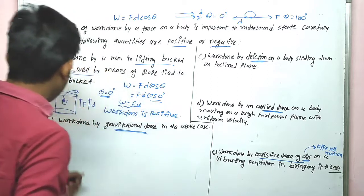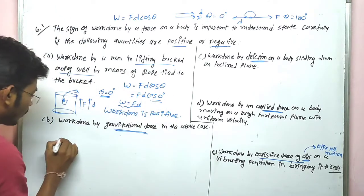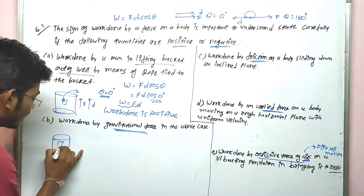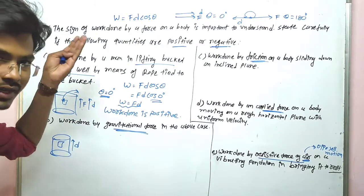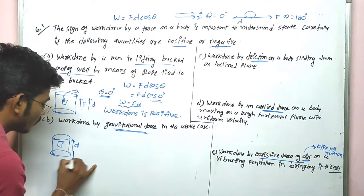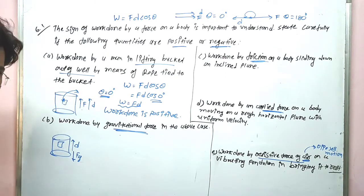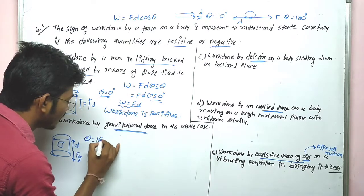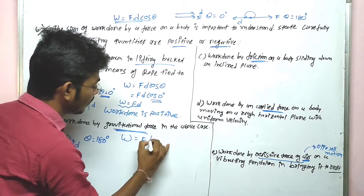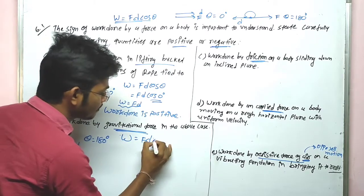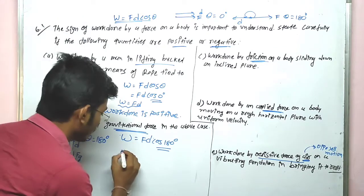Second case: work done by the gravitational force in the above case. The bucket's displacement is in the upward direction, but gravitational force acts in the downward direction. So the angle between them is equal to 180°, and cos180° = -1.